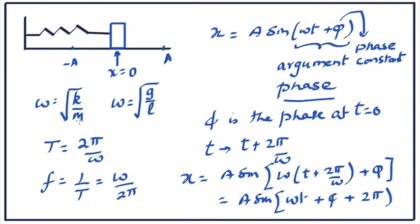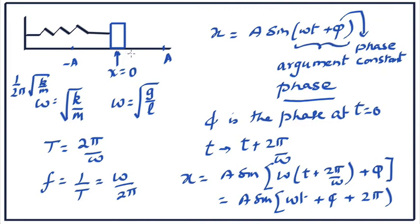The frequency of the mass-spring system is 1 over 2 pi times root k by m. For the simple pendulum, it's 1 over 2 pi times root g by l. So the moment you give me the spring and the block, the frequency is determined. Whether you pull it aside by 5 centimeters and release it or pull it aside by 1 millimeter and release it, the time period and the frequency are the same. This is a property that is peculiar to simple harmonic motion as opposed to all other kinds of oscillations.